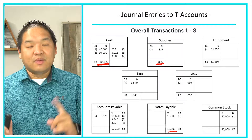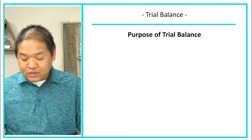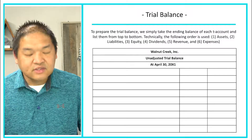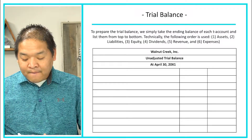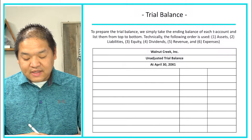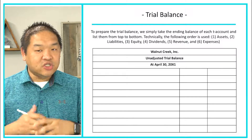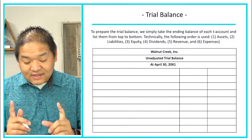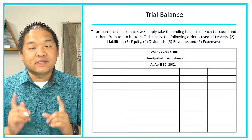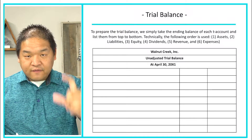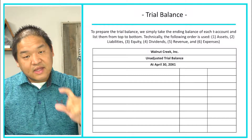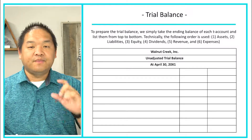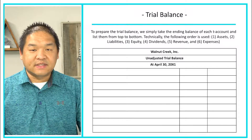Moving on to the trial balance — this is what it looks like. To prepare it, we take the ending balance of each T-account and list them top to bottom. There is an order: assets go first, then liabilities, then equity, then dividends, then revenue, then expenses — in that order.